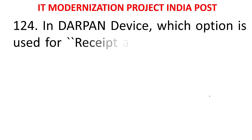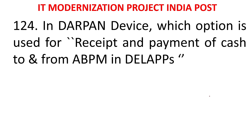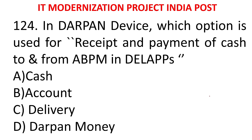MCQ 117: In DARPAN device, which option is used for receipt and payment of cash to and from ABPM in the delivery app? Cash, account, delivery, or DARPAN money. The answer is account. This option - account - is used in the delivery app for cash transactions with ABPM.